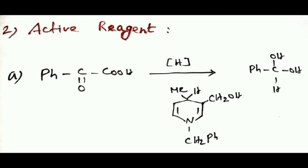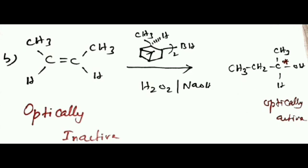Second method of asymmetric synthesis uses an active reagent. For example, C6H5COOH substrate in a reaction. If this is the S-isomer reagent, we get the R product. Conversely, if we use the R reagent, we get a different product. With an optically inactive compound undergoing hydroboration with an optically active reagent, we get an optically active R product. Using an S-isomer reagent will form a different compound.